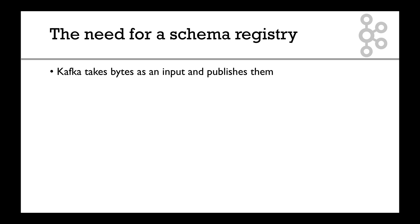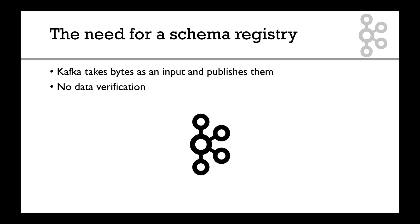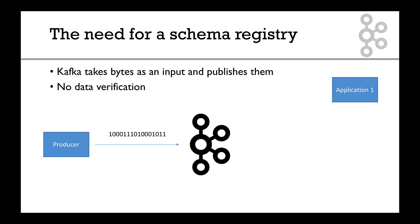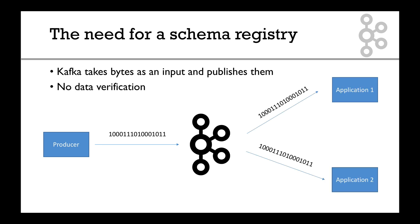Kafka takes bytes as an input and then publishes them as an output. Kafka does not perform any data verification. We have a producer and it sends bytes to Kafka — a series of zeros and ones. It doesn't know if it's a string or an integer or if it's JSON or whatever; it's just bytes. These bytes are redistributed to many applications, and your applications are basically consumer groups. From Kafka's perspective, it doesn't know what the data is — it just receives zeros and ones and transmits them to consumers downstream.